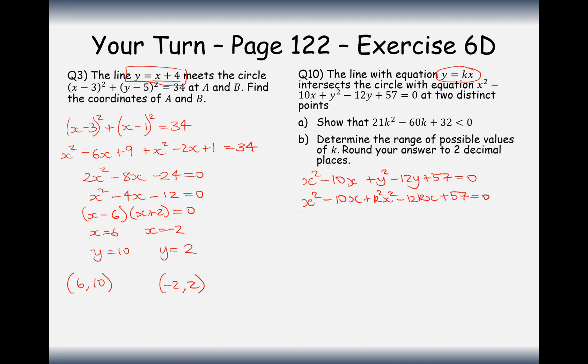Now, we should group together. The x squared terms here is going to form x squared plus k squared x squared. I've factorized out the x squared there. Then, we're going to get minus 10 minus 12k on the x, factorizing out the x. And, we're also going to get plus 57 equals 0.